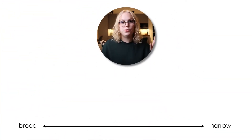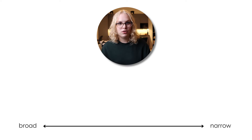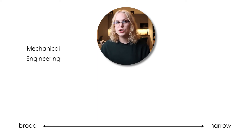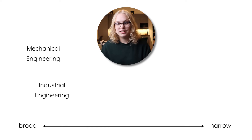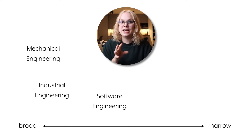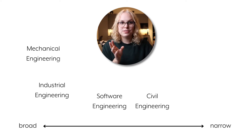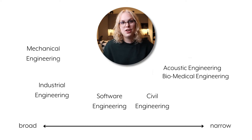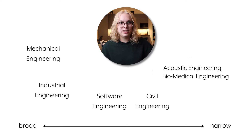If we imagine a scale from broad to narrow, on the very broad side we would put mechanical engineering and industrial engineering. In the middle we might have software engineering and civil engineering. And at the very narrow end of the spectrum we have specialized niche disciplines like acoustics engineering or biomedical engineering.